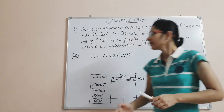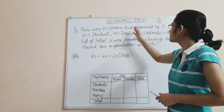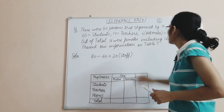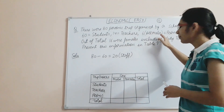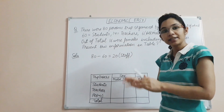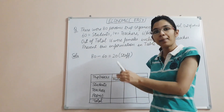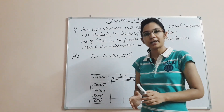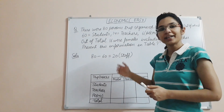Now, friends, let's do a small numerical from this chapter which will cover all types of things. Let's see the question: there were 80 persons on a trip organized by a school, out of which 60 were students, 14 were teachers, and 6 were parents. All parents were males. Out of the total, 16 were females, including one lady teacher. We need to present this information in a table. The data extraction is the important part before constructing the table.